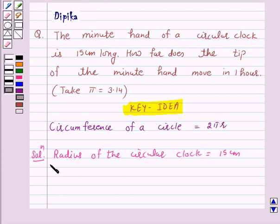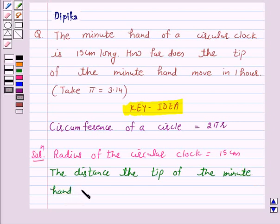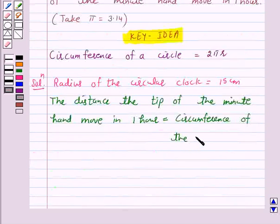So the distance the tip of the minute hand moves in 1 hour is equal to the circumference of the circle. Because according to our key idea, the distance around a circular region is known as its circumference.